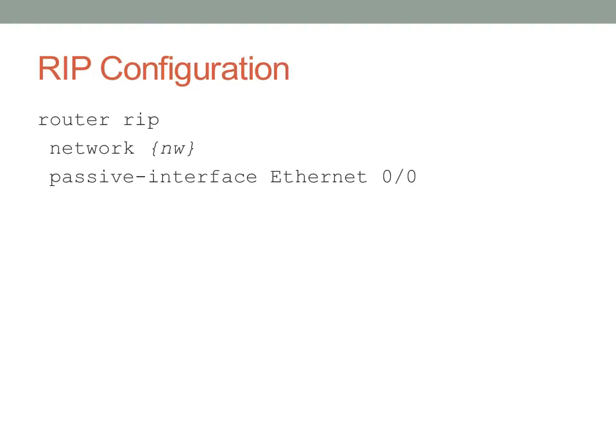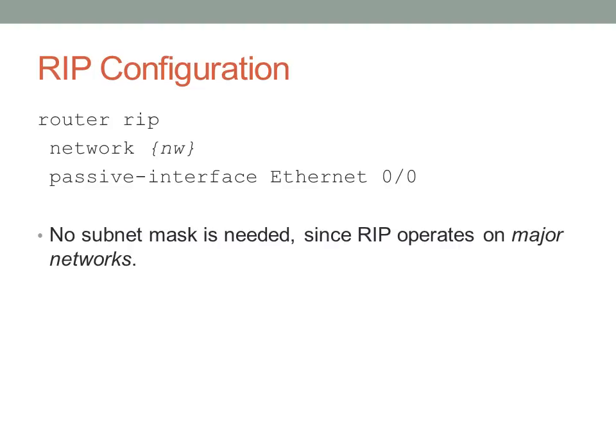You'll notice there's no subnet mask here — RIP does not care about subnet masks. For example, if you were to type 10.8.0.0 to try to get the 10.8 network advertised by RIP, the router would assume you're talking about all 10.0.0.0/8 networks and replace your command with 10.0.0.0. It looks at classical boundaries, so we have to be very careful. Optionally, if you want to specify a passive interface where RIP is not advertised, you use the command 'passive-interface ethernet 0'. No subnet mask is needed since RIP operates on major networks.